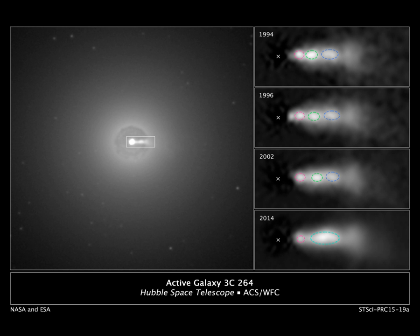An astrophysical jet is an astronomical phenomenon where outflows of ionized matter are emitted as an extended beam along the axis of rotation. When this greatly accelerated matter in the beam approaches the speed of light, astrophysical jets become relativistic jets as they show effects from special relativity. The formation and powering of astrophysical jets are highly complex phenomena that are associated with many types of high-energy astronomical sources.